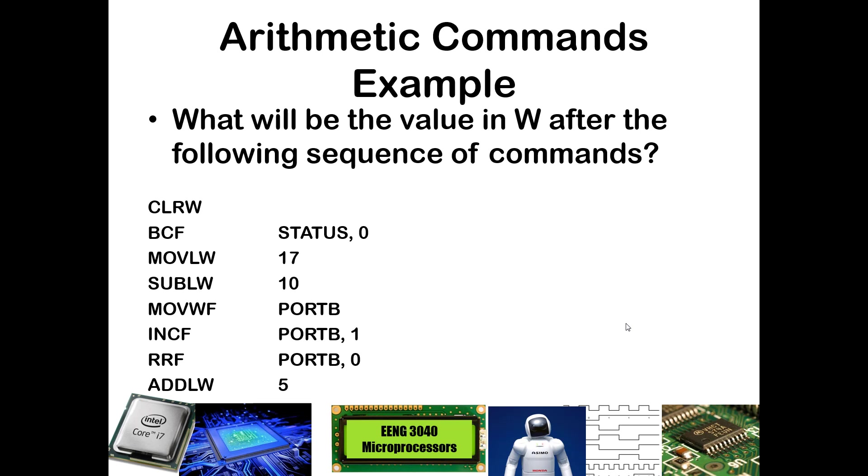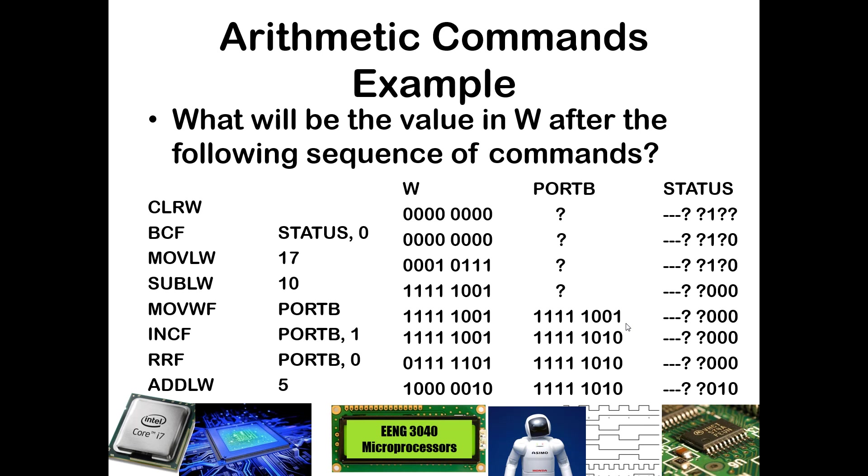Let's go ahead and go through the result. CLRW clears out W, so zeros fill up the W register. It does not impact PORTB at all, so we don't know what's in PORTB. It's important to note in the status register for this PIC that most significant 3 bits are unimplemented, so we have dashes there. We're not going to worry about the next 2 bits. They don't have anything to do with mathematical operations. They're more things that are powered down and dealing with timers and things like that. CLRW does set the Z bit, so because the value in W did go to 0, the Z bit does get set.